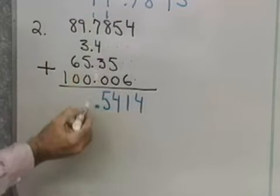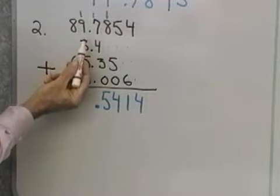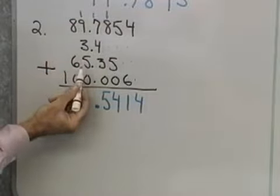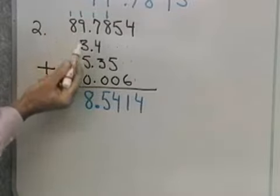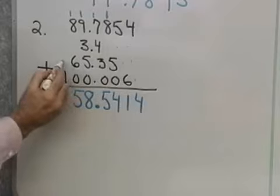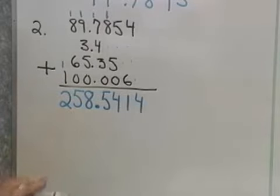Now, I put my decimal point in. Carry that 1 to the next column. 10 and 3 is 13, and 5 is 18. Carry the 1 to the next column. 8 and 1 is 9, and 6 is 15. Carry that 1, and I end up with 2.